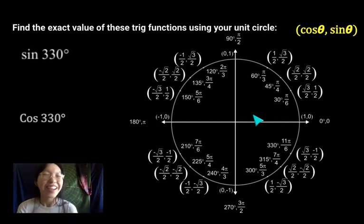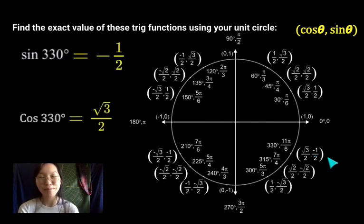Did you get it? Alright, sine of 330 is right here. And cosine of 330 is right here. So you'll have negative 1 half as your sine value and positive square root 3 over 2 as your cosine value.